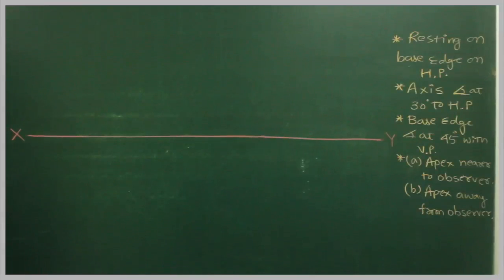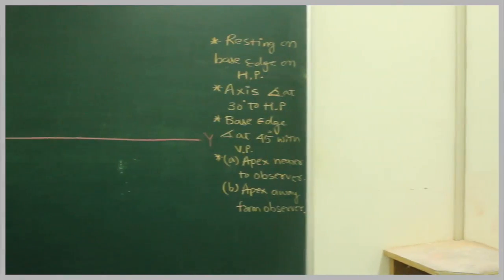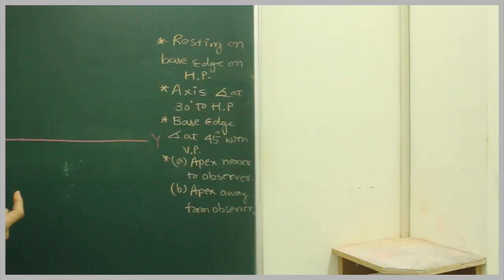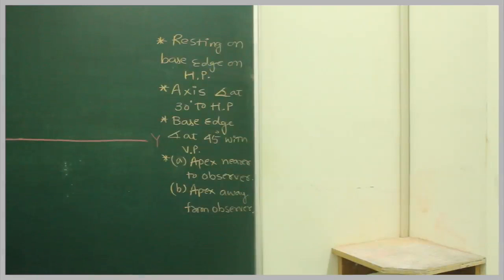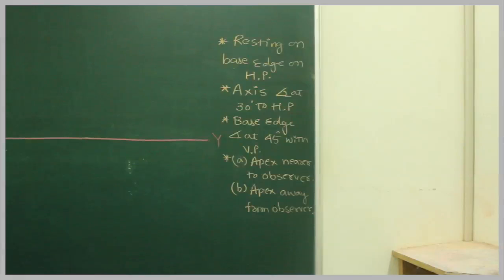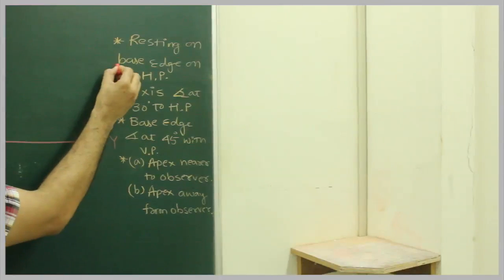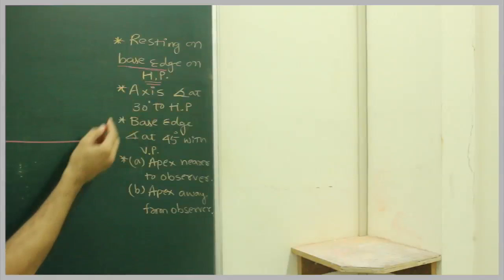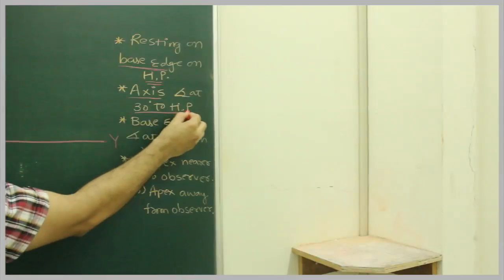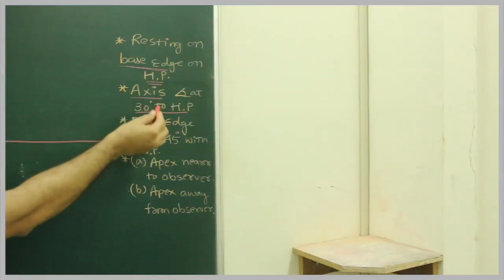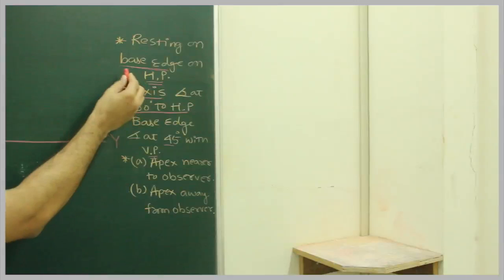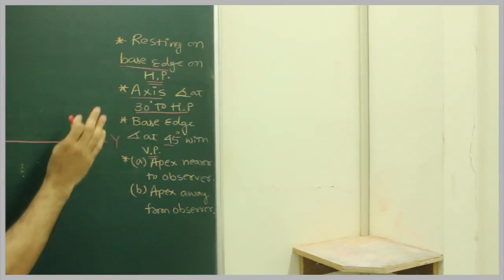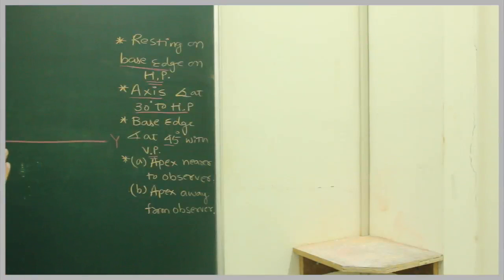A square pyramid is resting on one of its base edges on the HP. The axis is inclined at 30 degrees to HP, then that base edge is inclined at 45 degrees to VP. We have to draw it when the apex is nearer to the observer and when the apex is away from the observer. It is resting on base edge on horizontal plane, with axis inclined at 30 degrees to HP, then base edge inclined at 45 degrees to VP.